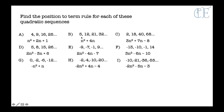Here are the answers for the practice quadratic sequences: n squared plus 2n plus 1; n squared plus 4n; 3n squared plus 7n minus 8; 2n squared minus 3n plus 6; 2n squared minus 4n minus 7; 3n squared minus 6n minus 10; minus n squared plus n; minus 2n squared plus 4n minus 4; and finally minus 2n squared minus 5n minus 3. Quadratic sequences can get a bit tricky so make sure you practice.